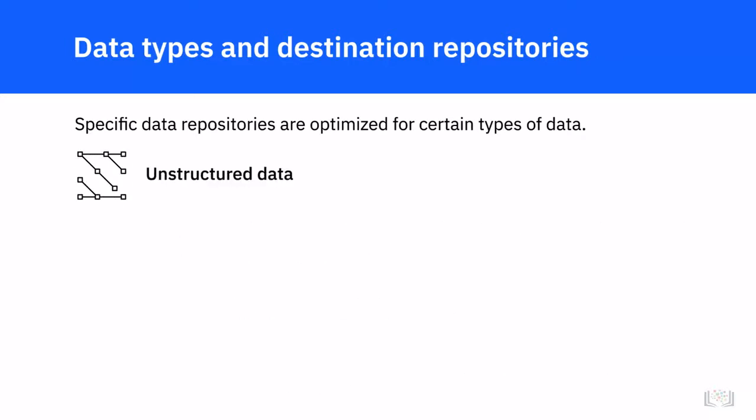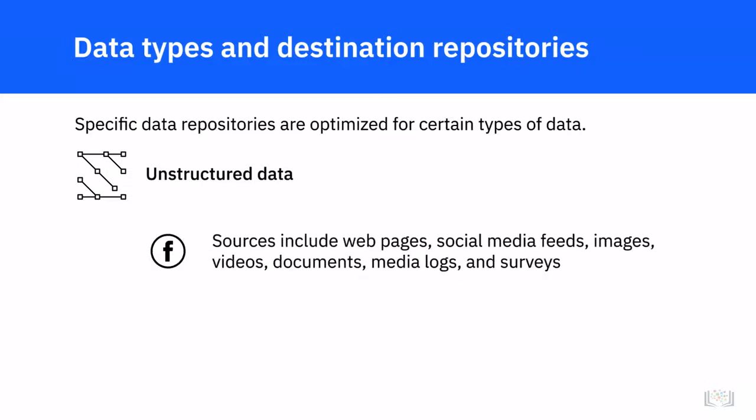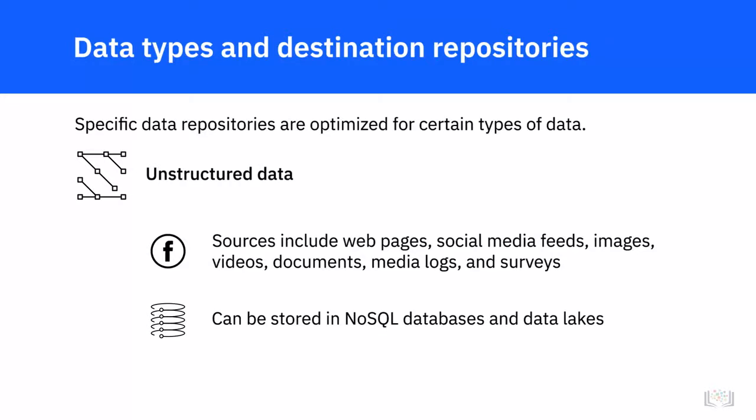Unstructured data is data that does not have a structure and cannot be organized into a schema, such as data from web pages, social media feeds, images, videos, documents, media logs, and surveys. NoSQL databases and data lakes provide a good option to store and manipulate large volumes of unstructured data. Data lakes can accommodate all data types and schema.